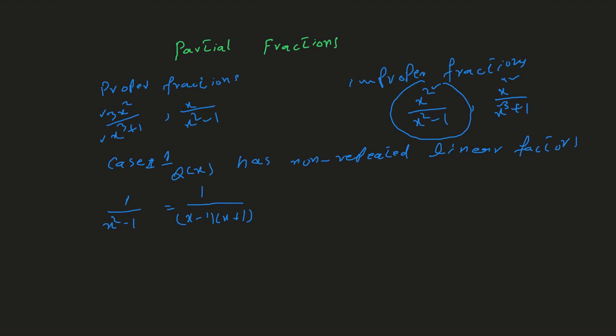These two factors are non-repeated and linear — the degree of the variable is 1 for both. What you have to do is write a first constant over the first factor plus a second constant over the second factor. For example, 3x over (x − 1)(4x + 1) is also the first case, so you split it into A over the first factor plus B over the second factor. This is how we split a fraction into its parts — that is called partial fractions.